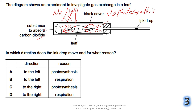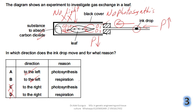Because pressure inside decreases, the atmospheric pressure outside is higher, so it pushes the ink drop to the left. The answer is B — the ink drop moves to the left due to respiration, not photosynthesis, because the black cover prevents any light from entering.